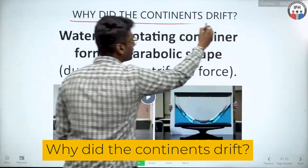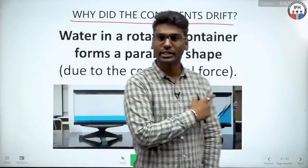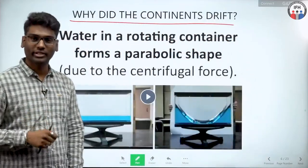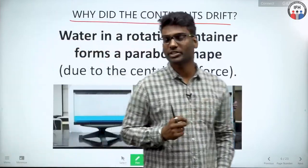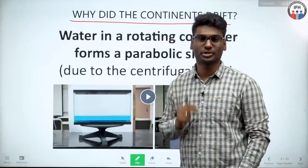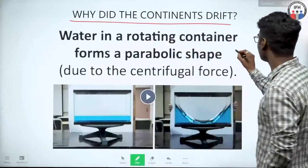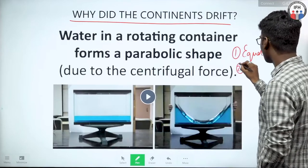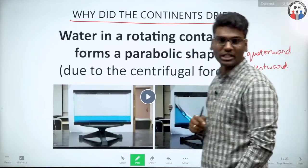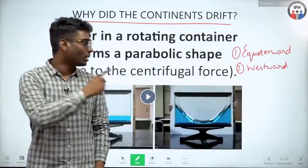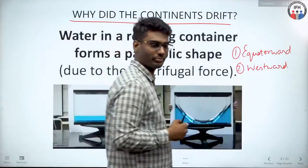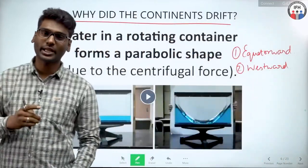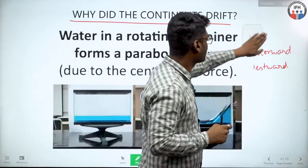Now, why did the continents drift? Alfred Wegener proposed two different forces. The first one being equatorward, and the second one being westward. The drift of the continents happened either towards the equator or towards the west. Why only these two directions — why not east, why not south? Let us take each one at a time, starting with the equatorward movement.